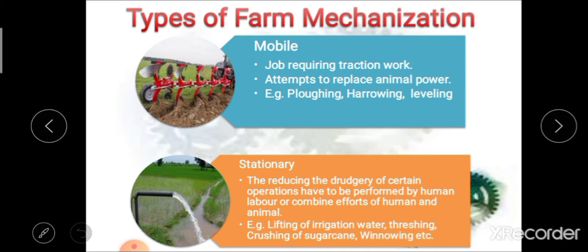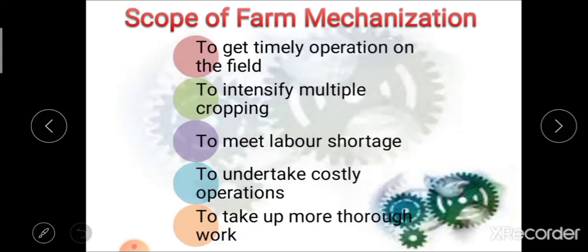So these are the four major types of farm mechanization: complete, partial, mobile, and stationary farm mechanization. After the types of farm mechanization, the next point is the scope of farm mechanization. There is wide scope for farm mechanization. The first scope is to get timely operations on the field — machines can complete work on time, otherwise crop yield may be small or if sowing is not done at the right time, the farmer will suffer a loss.